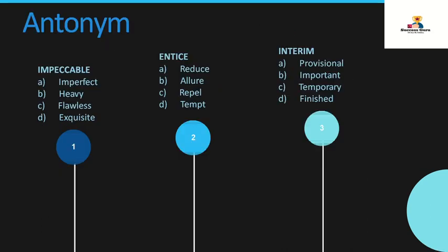Next we have antonyms. The very first word is 'impeccable,' which means perfect or exact. But here we are doing antonyms, so we have to find the opposite meaning. The correct one is option A: imperfect. For example: the video he created is impeccable.